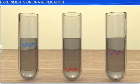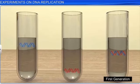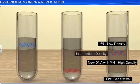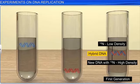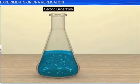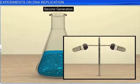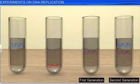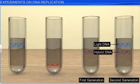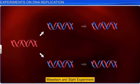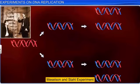It turned out that DNA extracted from the first progeny of E. coli, after the transfer from the ¹⁵N isotope to the ¹⁴N isotope medium, had an intermediate density. It was referred to as hybrid DNA. The next generation of E. coli, born after 40 minutes, had equal amounts of hybrid DNA and light DNA. Thus, the findings of the Meselson and Stahl experiment established the validity of Watson and Crick's theory of the semi-conservative DNA replication scheme.